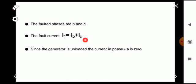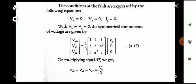The conditions at the fault are expressed by the following equations: VB equals zero, VC equals zero, because phases B and C are grounded, and IA equals zero because it is an unloaded generator.